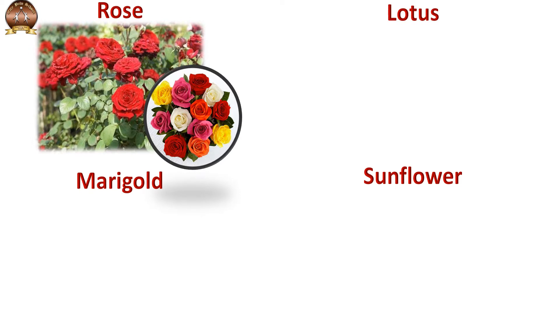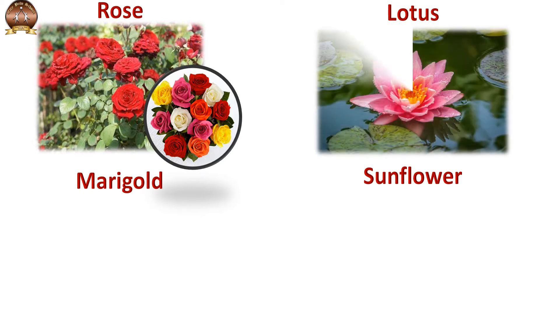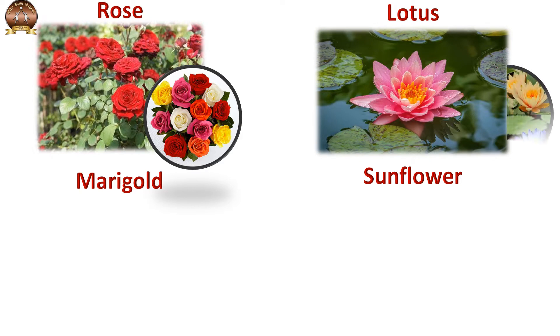Next comes lotus. So children, where do we see lotus? We see lotus in a pond or lake. Lotus also comes in different colors.